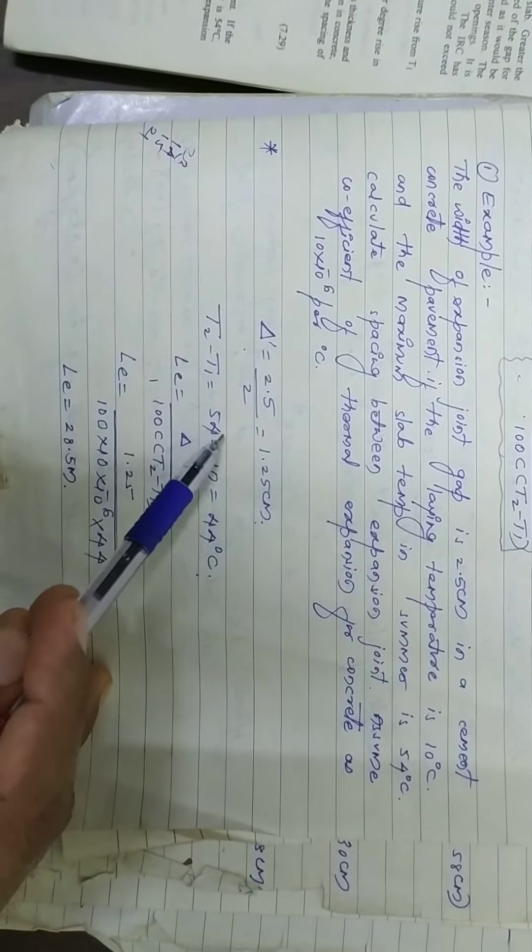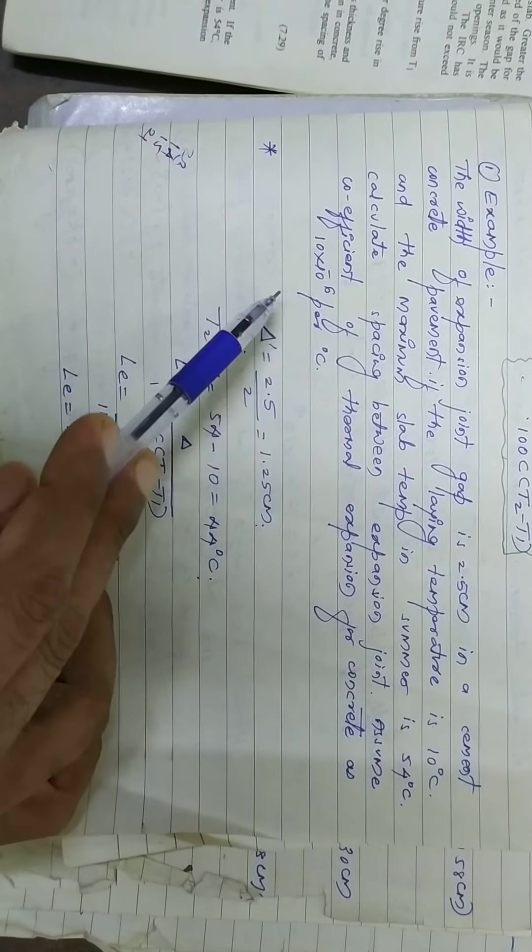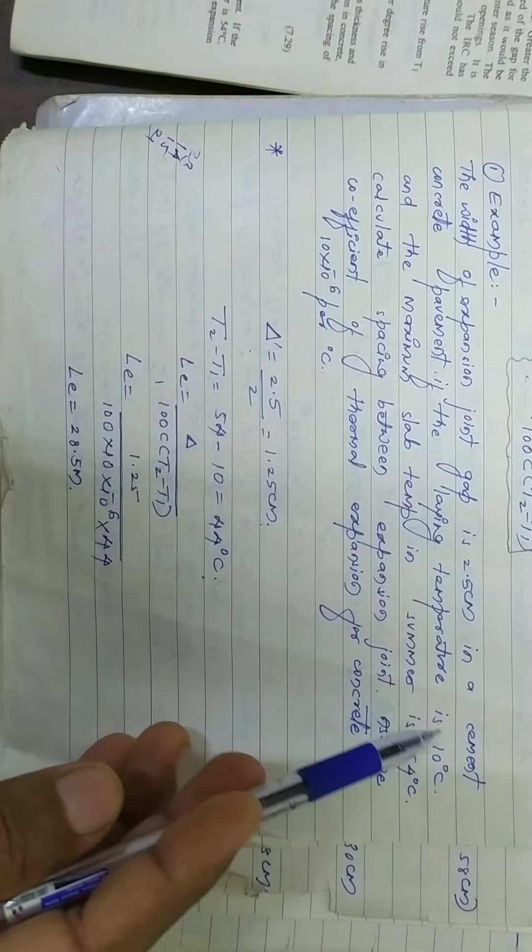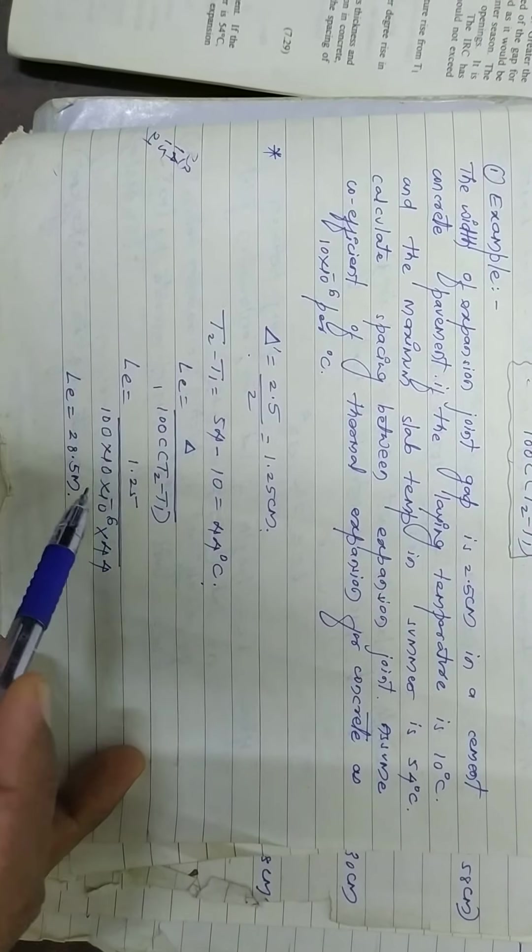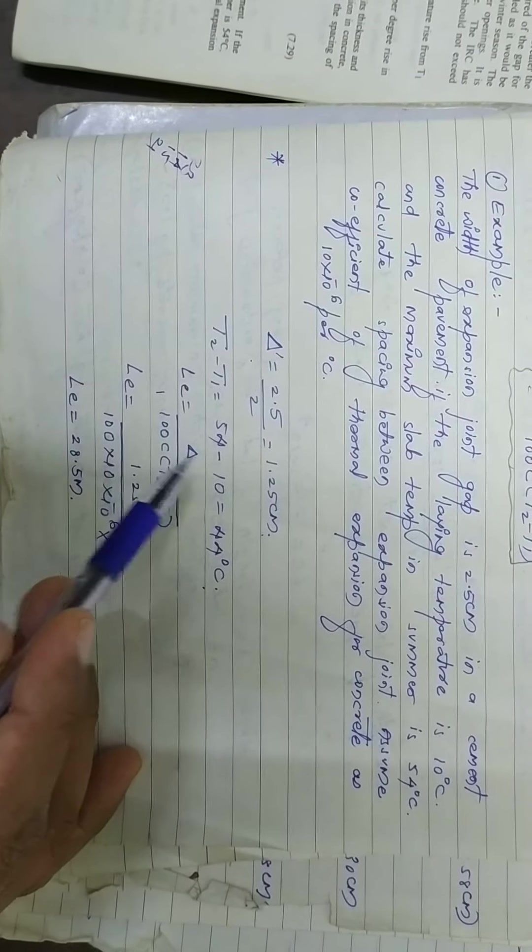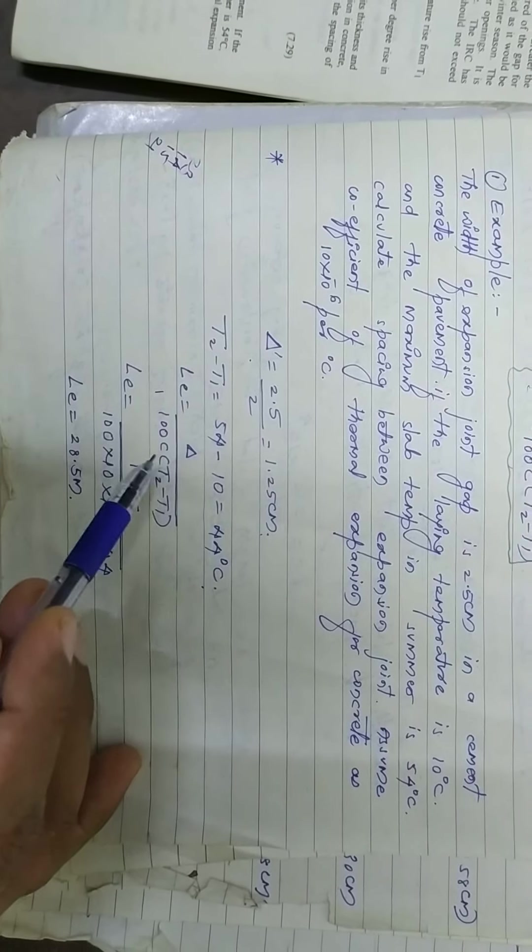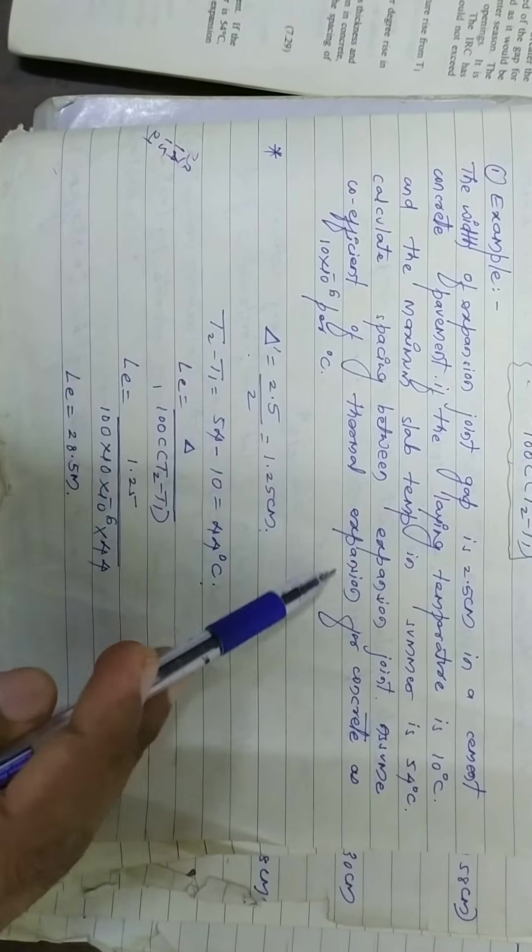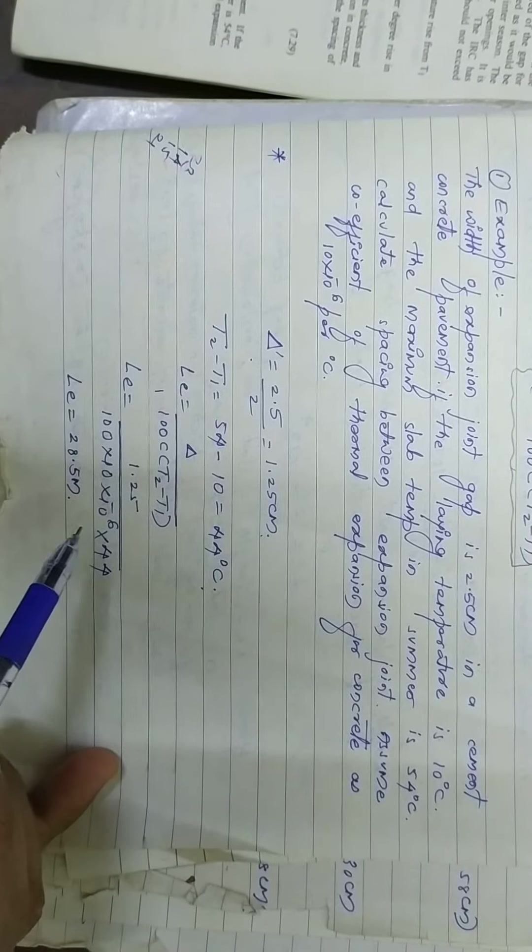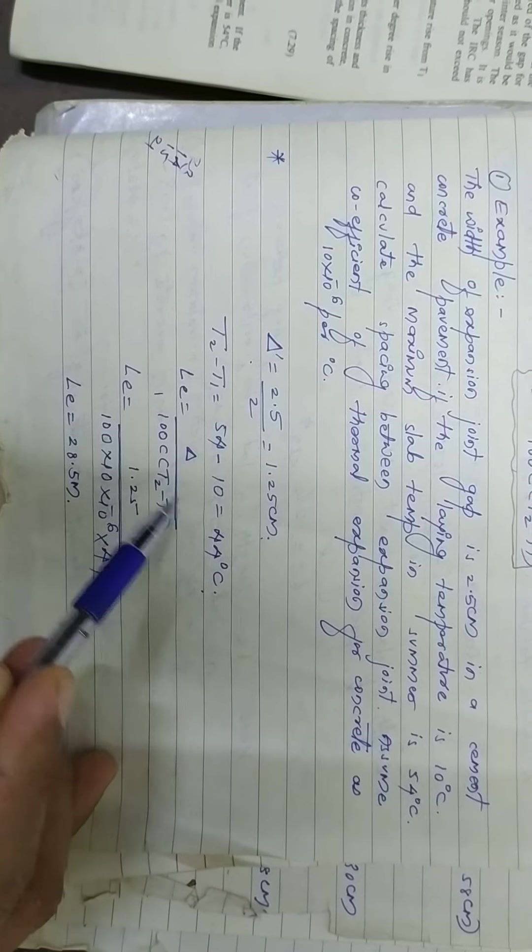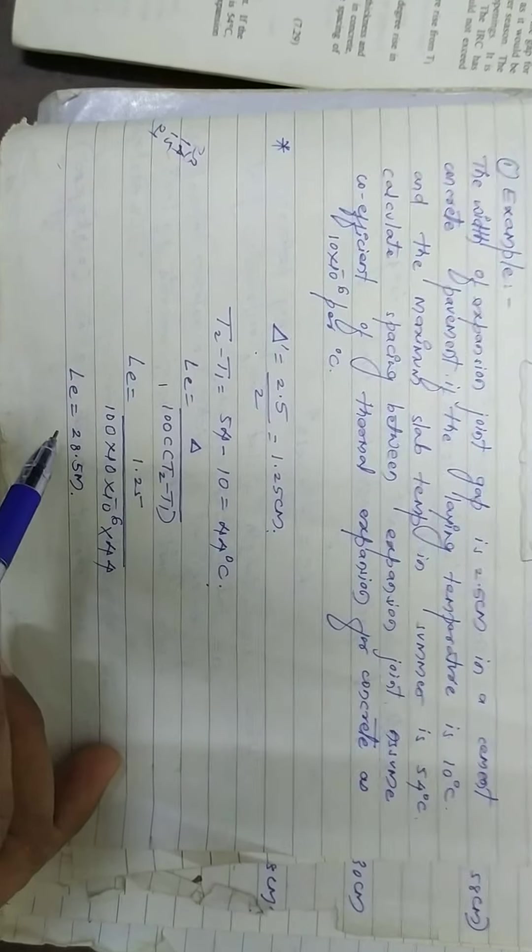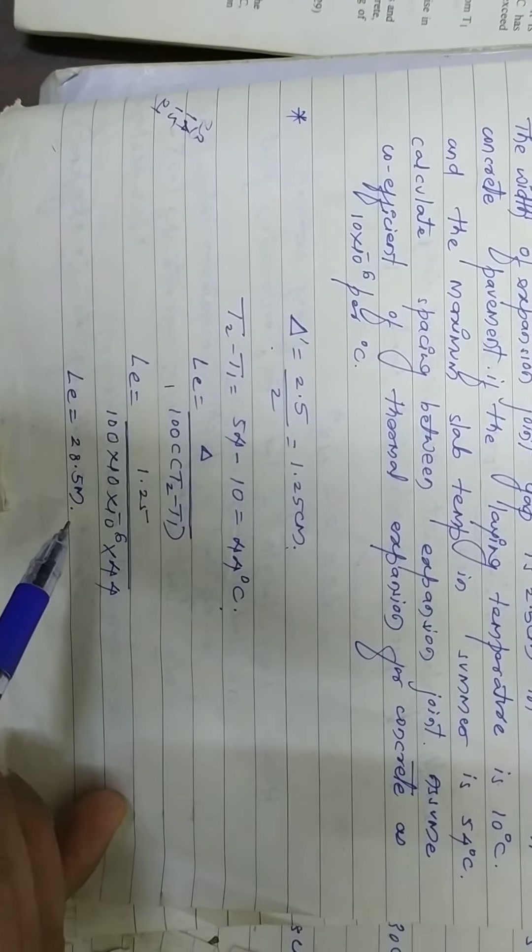The thermal expansion is 10 into 10 to the power of minus 6 per degree centigrade. So 1.25 equals L times 100 times C, which is 10 into 10 to the power of minus 6 per degree centigrade, into the difference T, which is 44. So we get 28.5 meter.